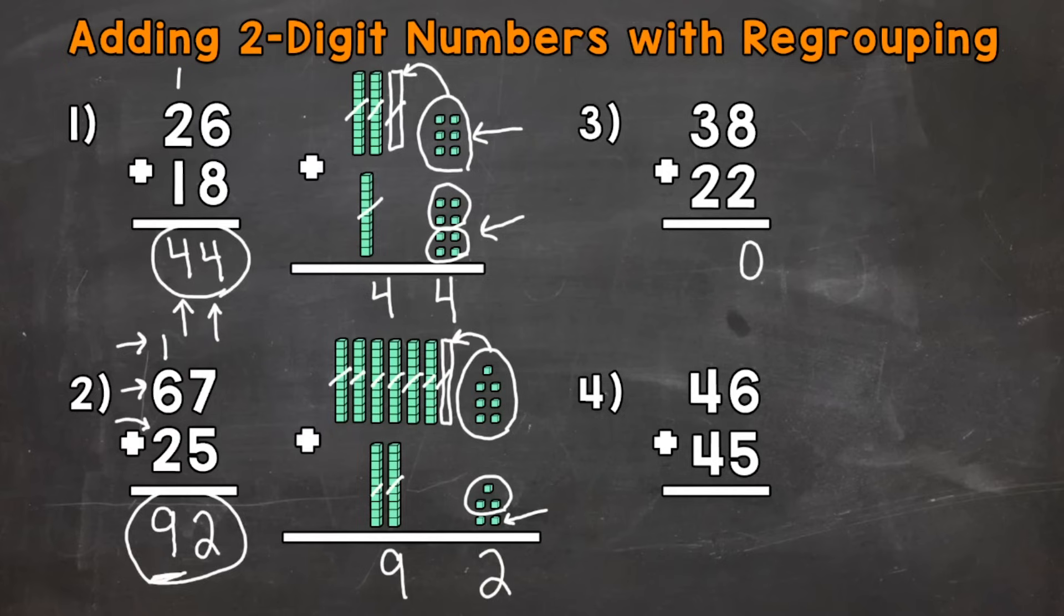And like numbers 1 and 2, we can't fit two digits into one place. So we need to regroup our 1 from the 10, our 1 group of 10, with the tens.